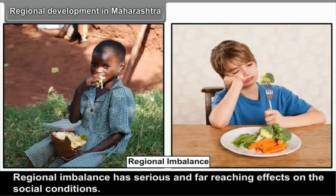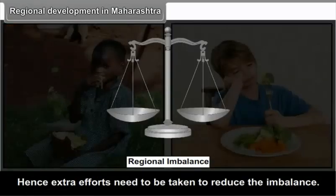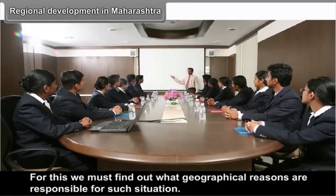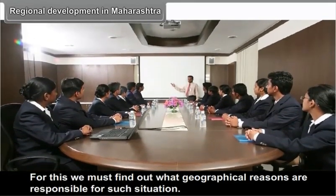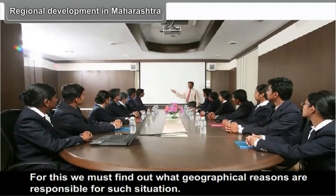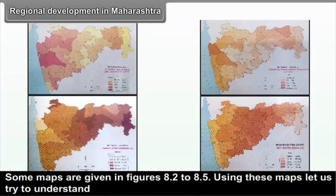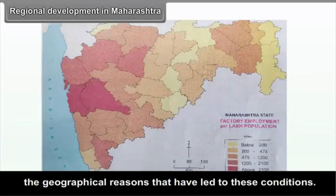The wide difference in HDI values points towards regional imbalance, indicating that development in the state is not all-inclusive. Regional imbalance has serious and far-reaching effects on social conditions. Hence, extra efforts need to be taken to reduce the imbalance. For this, we must find out what geographical reasons are responsible for such situations, using the maps in figures 8.2 to 8.5.